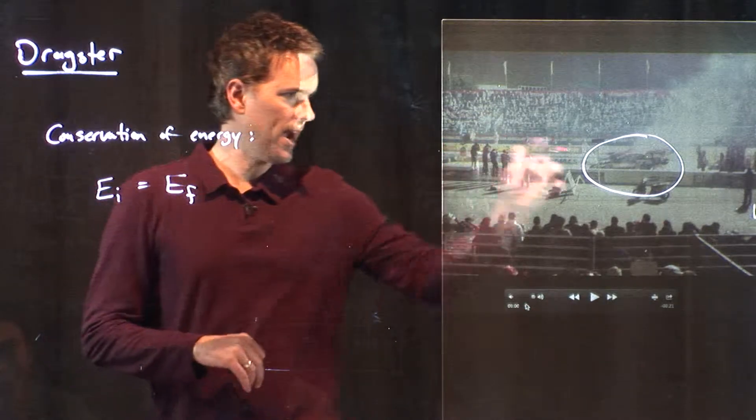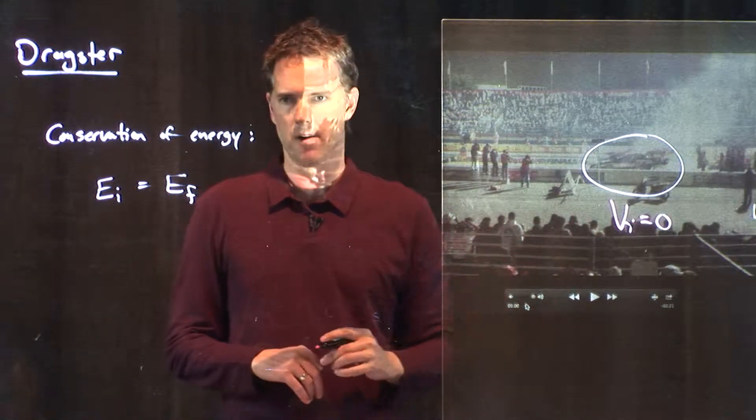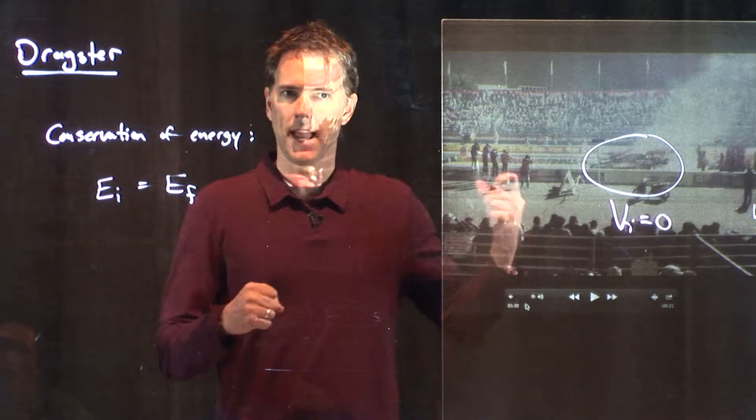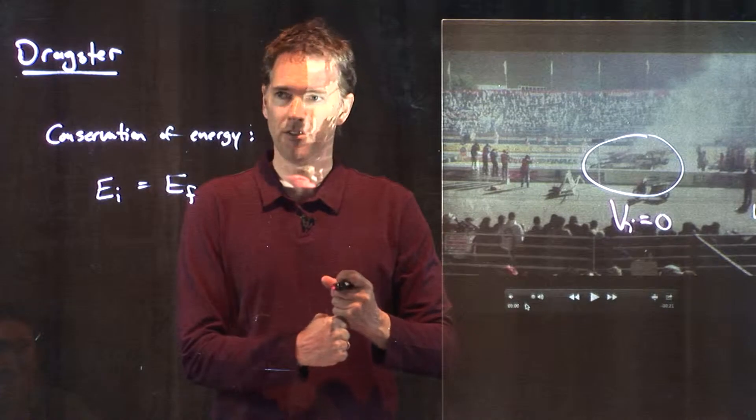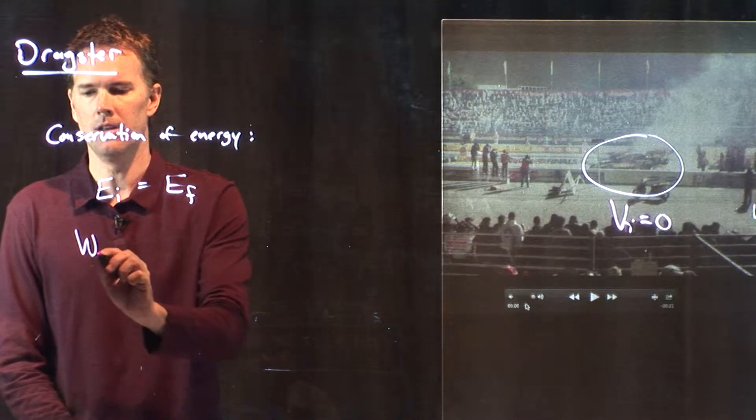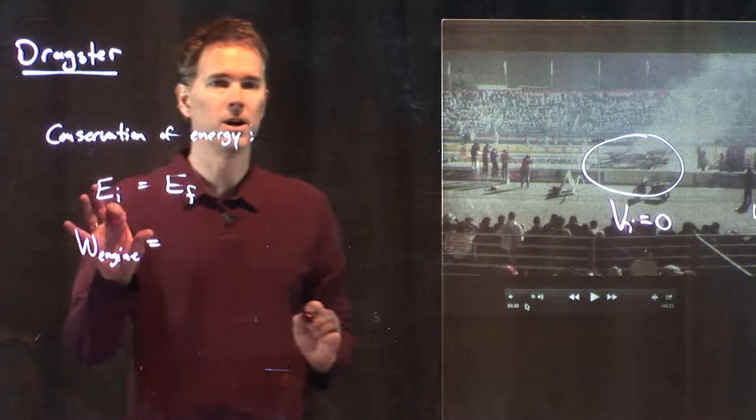So, initially, the dragster is sitting there at rest. Vi equals zero. There's no kinetic energy. But now we're going to put work into the system. Namely, the engine is going to provide a whole bunch of energy.